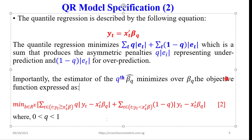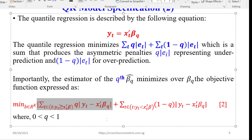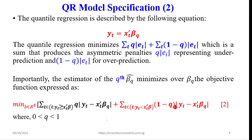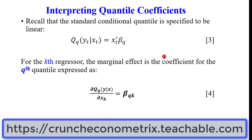The objective function is expressed as shown in equation 2. In contrast to OLS and maximum likelihood, QR uses linear programming methods, such that BQ — the beta relating to the Q quantile — identifies the particular estimate, which is different from the beta as it is for OLS.